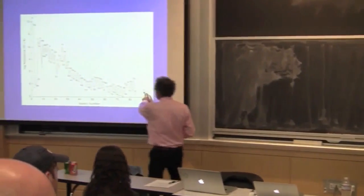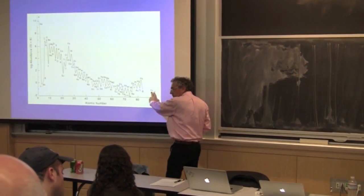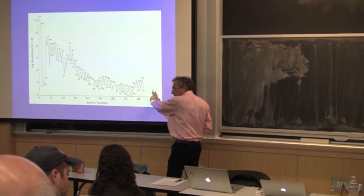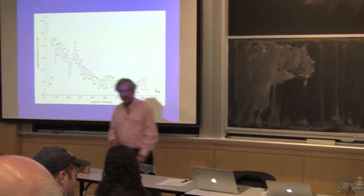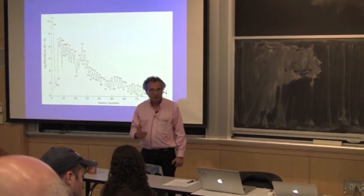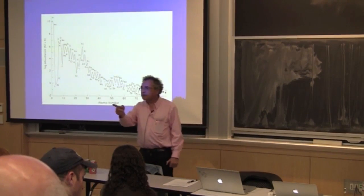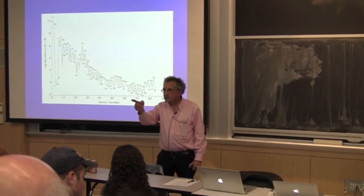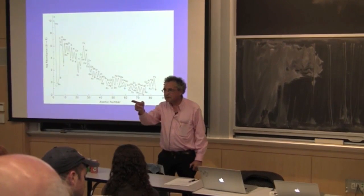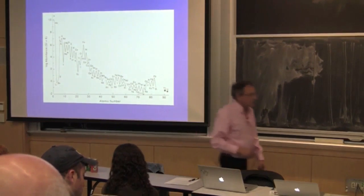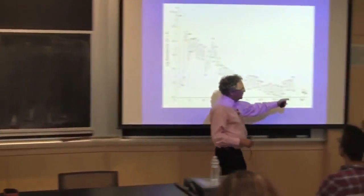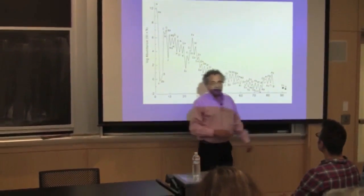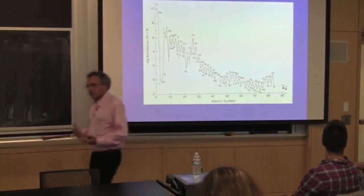We have two major radioactive sources that give us the heat driving this planet: uranium and thorium. There's one other — which other element is really important here? It's a much lighter element: potassium-40. Potassium-40, uranium-238, uranium-235, and thorium have decay series that lead to radiogenic heat over long periods of time.